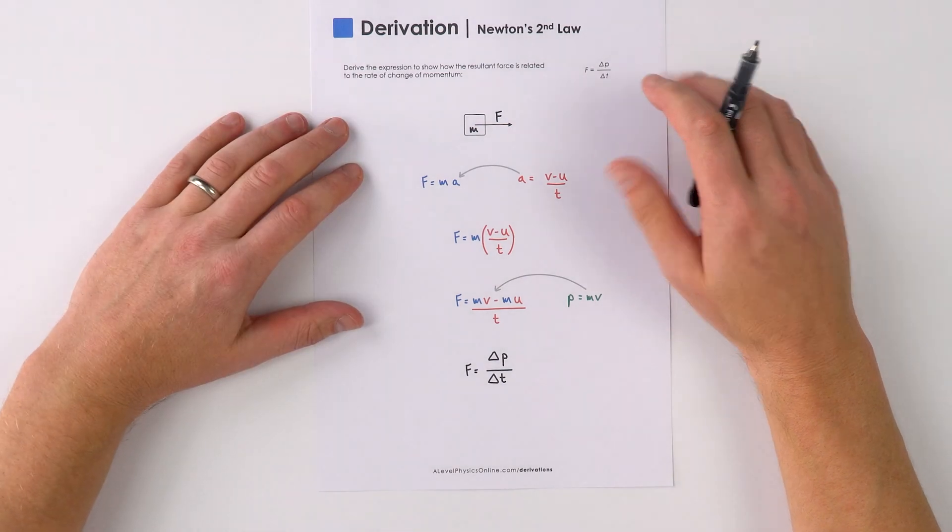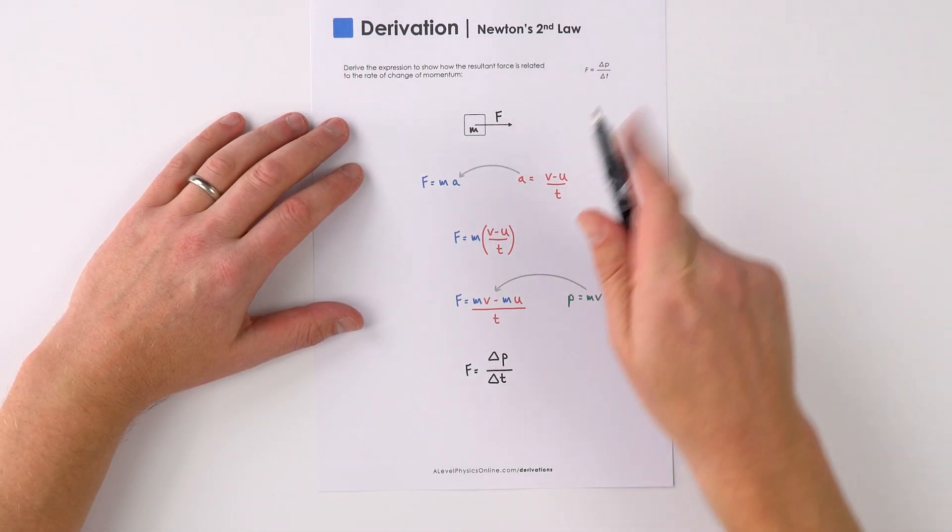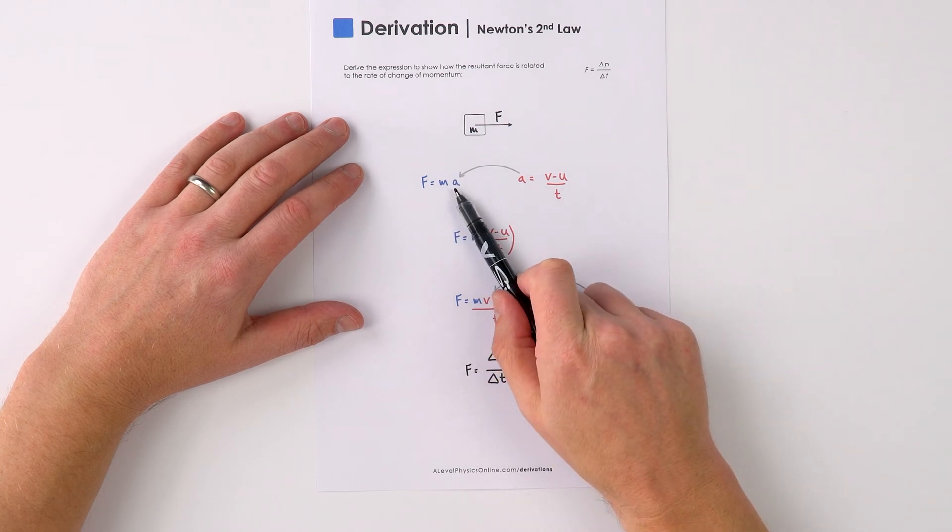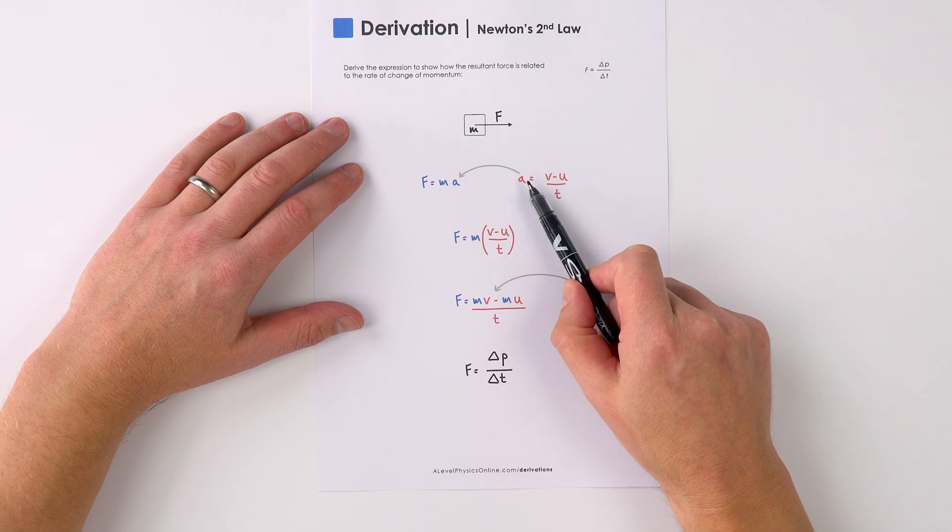Newton's second law is really defined as the force is proportional to the rate of change of momentum. Now we often use this equation here, f equals ma, and we know that the acceleration is equal to the change in velocity divided by time.